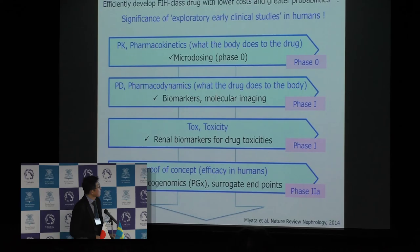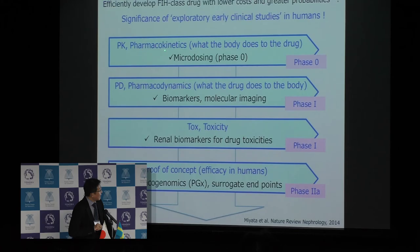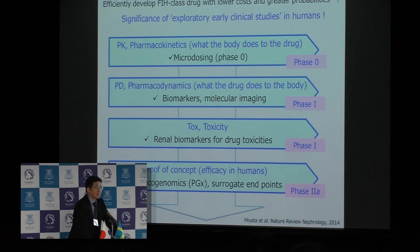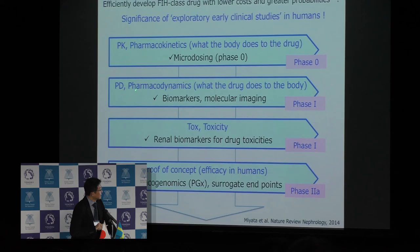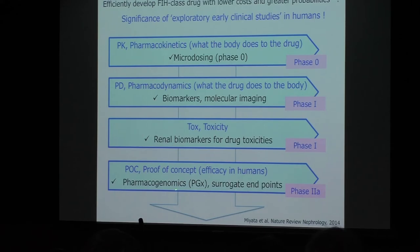We have a clue in this direction. The latest science and technology should be involved in exploratory early clinical trials in academia. For example, how to get efficiently and rapidly the pharmacokinetics — what the body does to the drug. We can rely on microdosing. We can assess pharmacokinetics with a small amount of investigational drug, usually less than 100 micrograms, and obtain pharmacodynamics — what the drug does to the body — through biomarker and molecular imaging technologies.